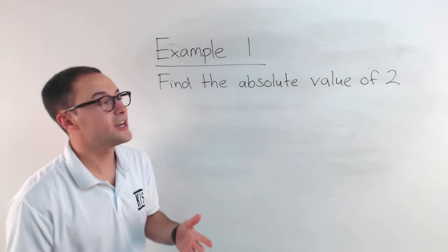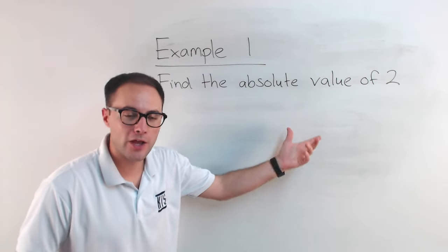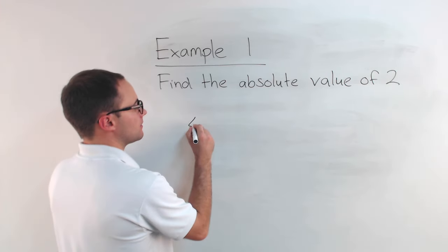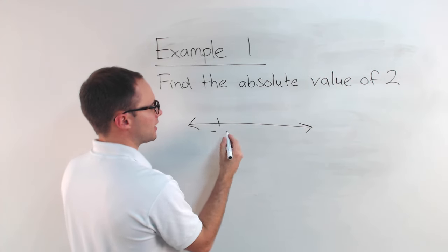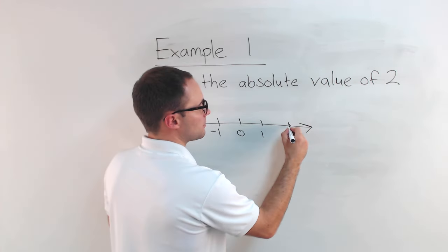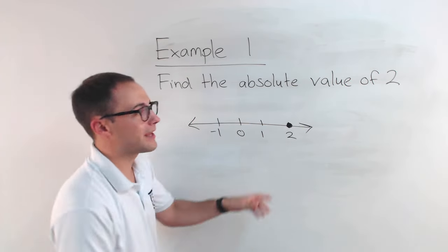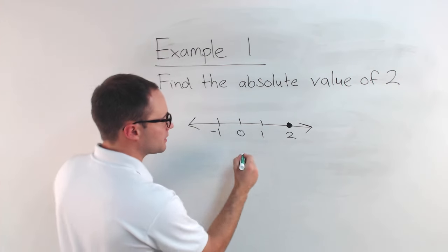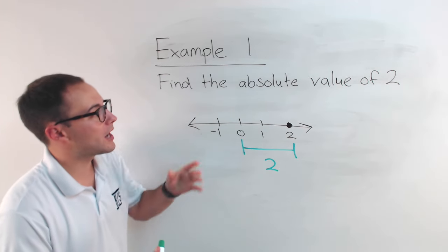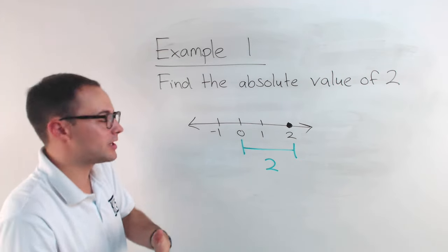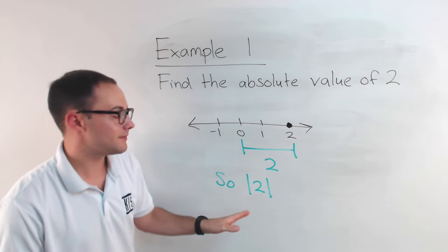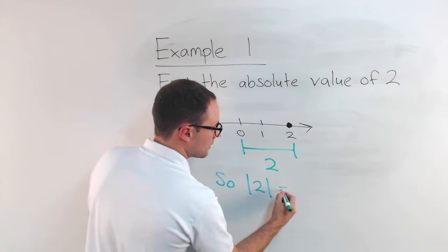Let's try some examples. Find the absolute value of 2. Absolute value is how far away is that number from 0 on a number line. Let's draw a number line: negative 1, 0, 1, and 2. To figure out the absolute value of 2, we need to figure out how far away it is from 0. That distance is 2. So the absolute value of 2 is 2. Notice it's positive.